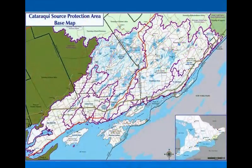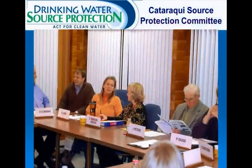Every source protection area or region has a source protection plan. The Clean Water Act established Conservation Authority jurisdictions as source protection areas. The Cataraqui Source Protection Area includes portions of three counties and all or part of twelve municipalities. The boundary is the same as that of the Cataraqui Region Conservation Authority with the addition of the Township of Frontenac Islands. The Cataraqui Source Protection Plan was developed by a committee of 16 members, including a chair, with representation from municipal, economic, and other public interest sectors such as environmental organizations or cottagers and shoreline residents.